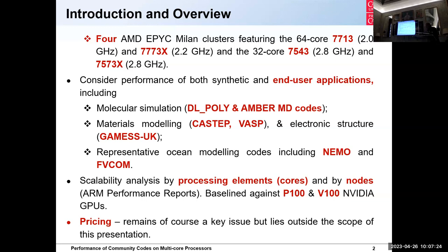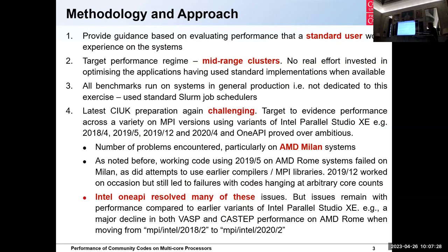Quick summary on methodology: no special treatment — codes are run as a standard user with no dedicated access, run in production mode. The focus is on mid-range clusters; the highest core count used in these applications is 1,000 cores. We're not talking about real scalability or weak scaling — just focusing on typical jobs that would run on a production cluster. The last two CIUK sessions wasted far too many hours running Intel Parallel Studio on AMD hardware.